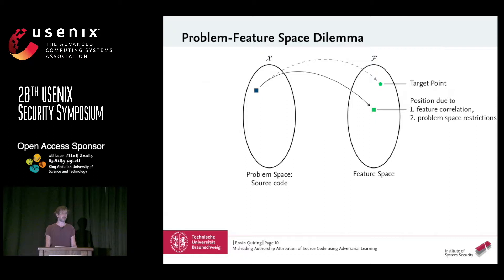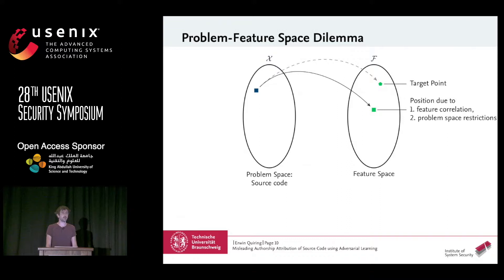Even if we change one feature, the TF-IDF weighting as a normalization across dimensions distributes this change over all other dimensions. We also observed that even if we wanted to increase the value of one feature, other feature values automatically decreased. This is coupled with domain restrictions: when changing int to long, for instance, we may have to change all the printf commands where it is used. Each tiny change needs to consider problem space validity — the source code should be compilable — and the smallest possible change may already impact multiple features. Furthermore, we cannot control the amount of changes precisely.